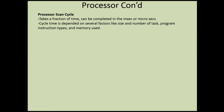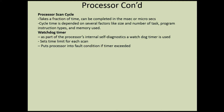The processor scan cycle takes a fraction of time and can complete in a millisecond or microseconds - it's getting faster and faster. Cycle time is dependent on several factors like the size and number of tasks, program instruction type, and memory used. Just like a computer, the more memory and tasks it has to run through, the slower it gets. Also incorporated is a watchdog timer as part of the processor's internal self-diagnostics. It sets a time limit for each scan, and if a scan takes longer than expected, it will put the processor into a fault condition.